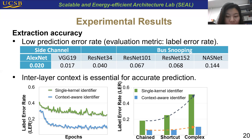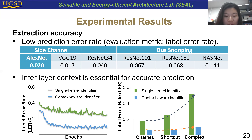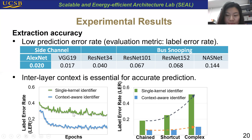We also validate the importance of context information. We compare the single layer identifier and the context-aware identifier used in DeepSniper. On average, there is a large gap in prediction accuracy between them, and this gap becomes significantly larger when confronting very deep and complex neural networks. Therefore, it is essential to take context into consideration.